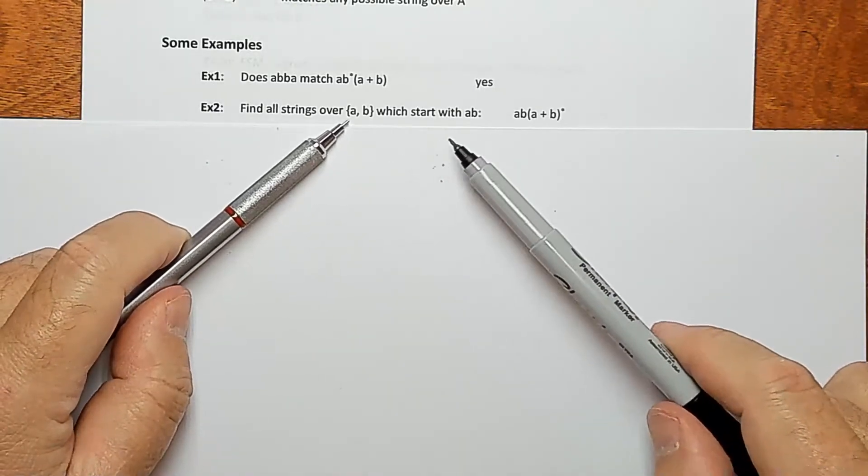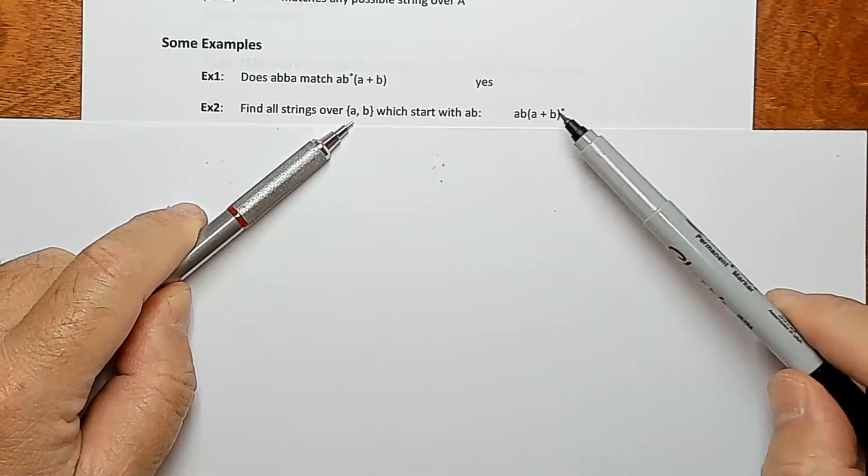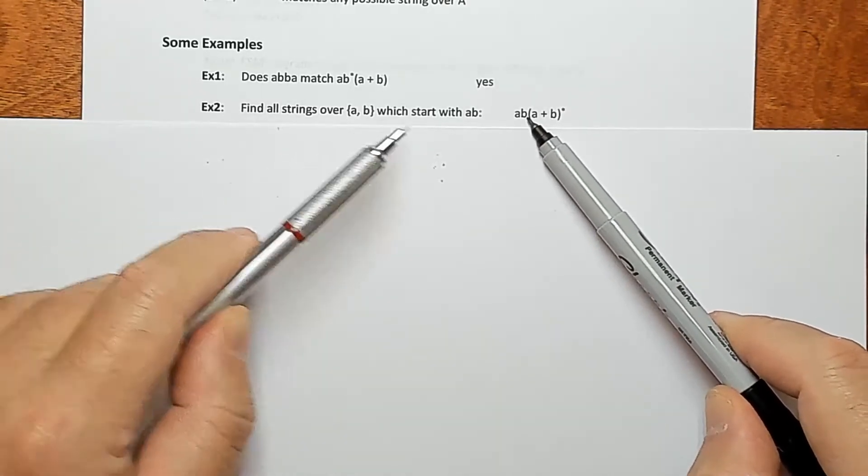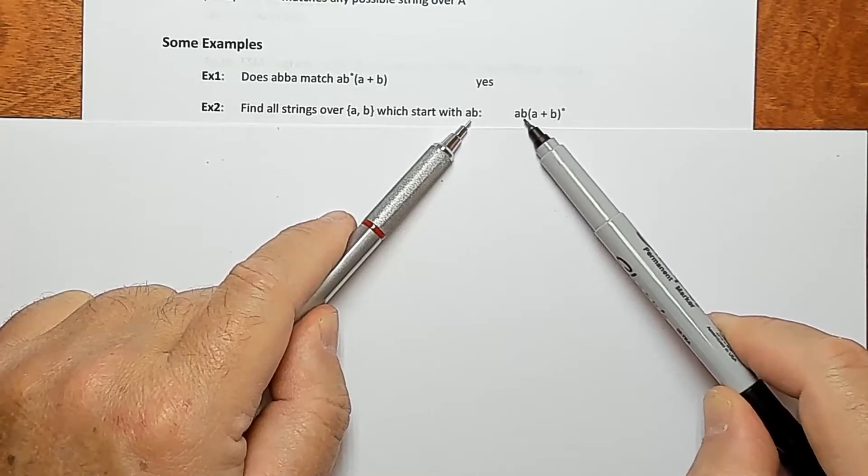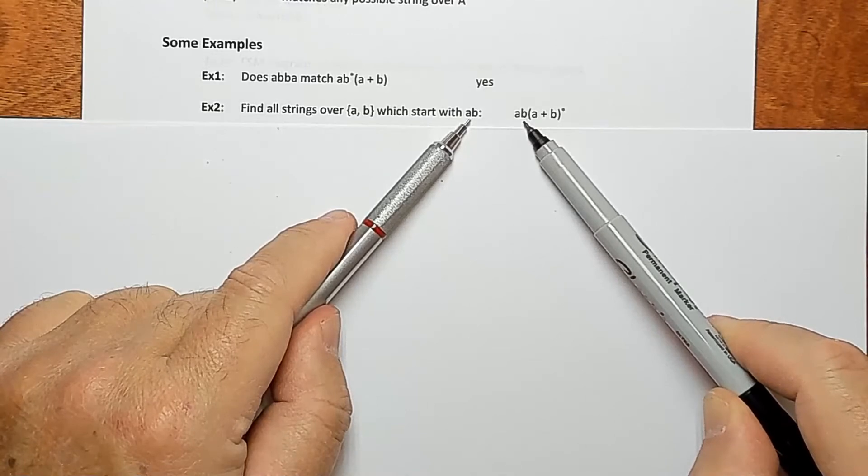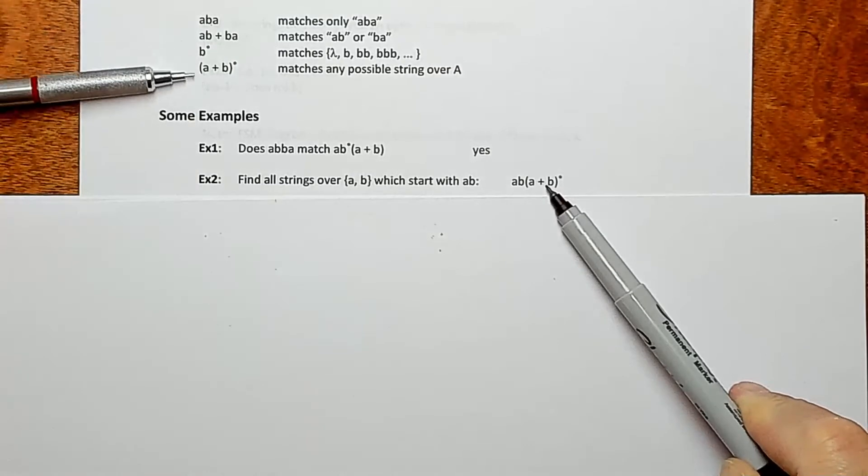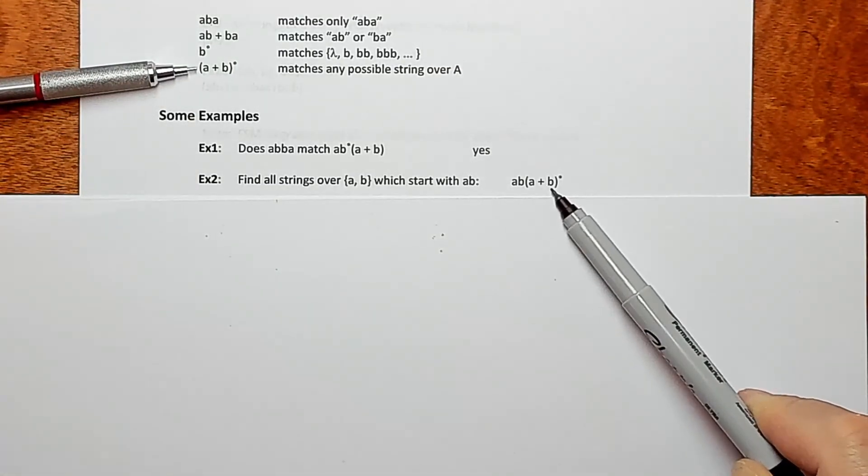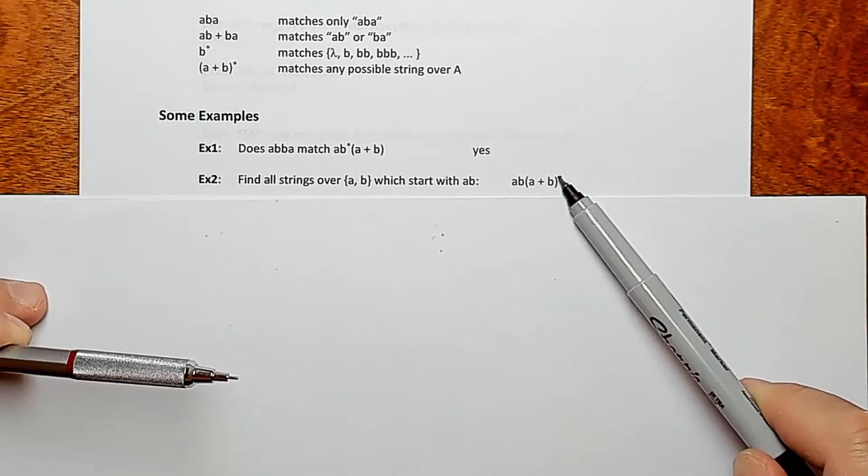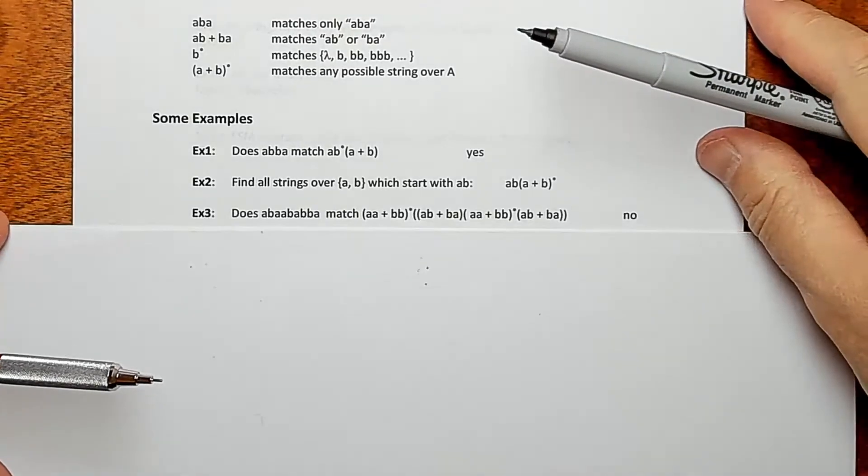So how about this guy? Find all strings over this alphabet which start with AB. This regex will do that. So you list the AB explicitly, because that's what we're trying to screen for, so to speak, strings that start with AB. So list AB explicitly. And then we'll use our little trick here, this pattern that matches anything here. Just throw that on the end. So this will guarantee that we have a string with AB, and then we can generate anything we want to following that. Okay, so this pattern will match all strings which start with AB.